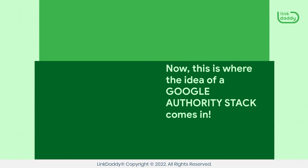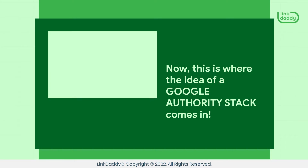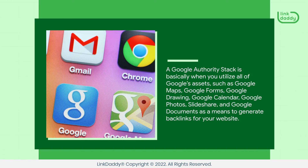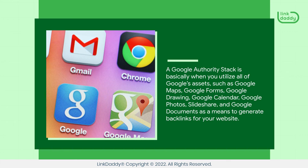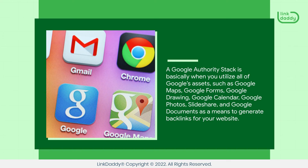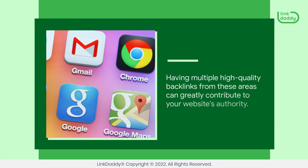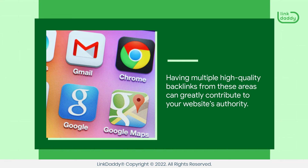Now, this is where the idea of a Google authority stack comes in. A Google authority stack is basically when you utilize all of Google's assets, such as Google Maps, Google Forms, Google Drawing, Google Calendar, Google Photos, Slideshare, and Google Documents as a means to generate backlinks for your website. Having multiple high-quality backlinks from these areas can greatly contribute to your website's authority.